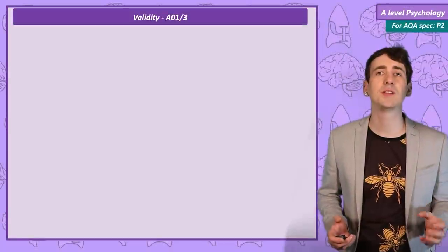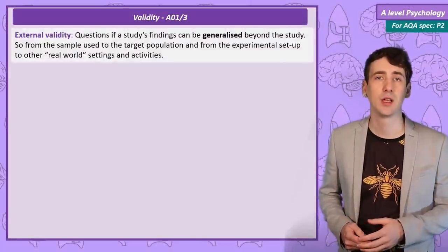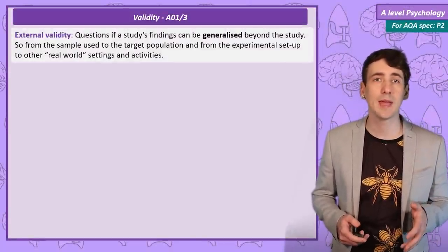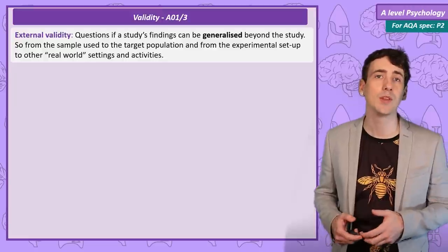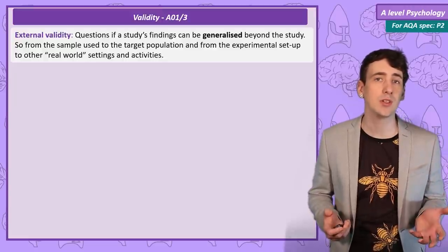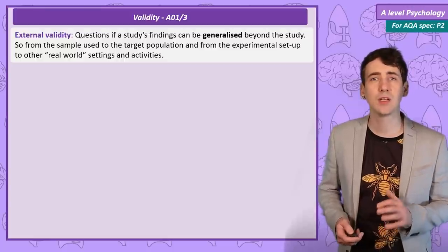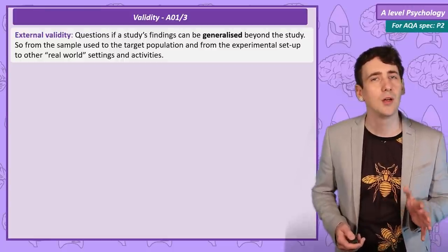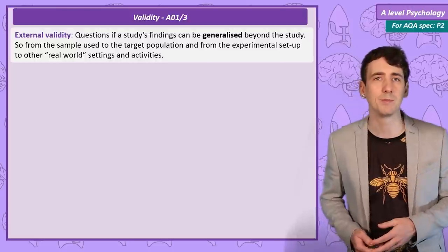External validity considers if we can generalise the findings — for example, the setting of the study, how close to normal behaviour the task set is, and when and on whom the study was conducted. If any of these are significantly different to the real world, we can suggest that the findings lack external validity.